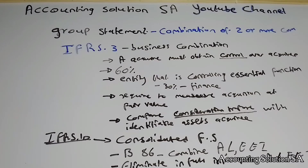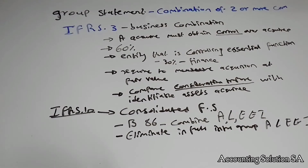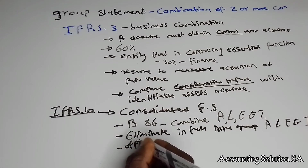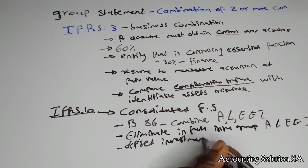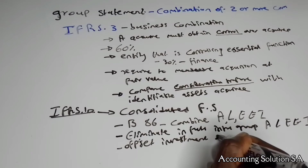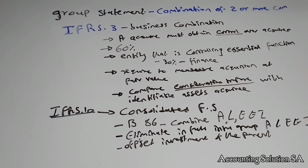For example, if we sold something to each other and made a profit, the principle says we have to reverse those profits. The other requirement is that we have to offset the investment of the parent — because when we purchased that company we recorded it as an asset, but now when we do a consolidated financial statement we have to reverse that investment.